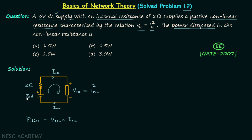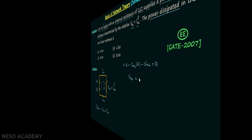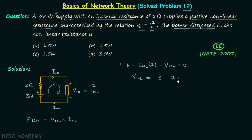Applying KVL in this circuit: 3 − I_nL × 2 − V_nL = 0. From here, V_nL = 3 − 2·I_nL. Since V_nL = I_nL², we substitute to get I_nL² = 3 − 2·I_nL, which gives the quadratic equation I_nL² + 2·I_nL − 3 = 0.